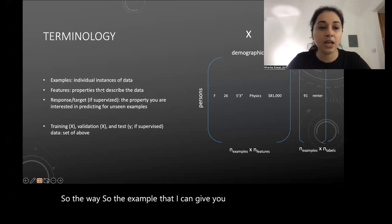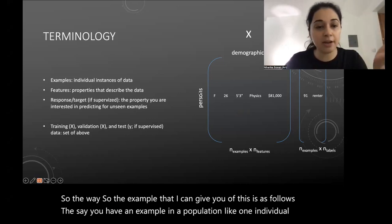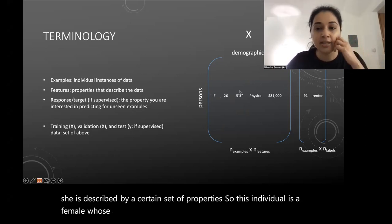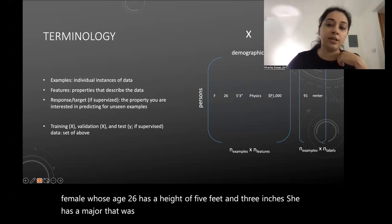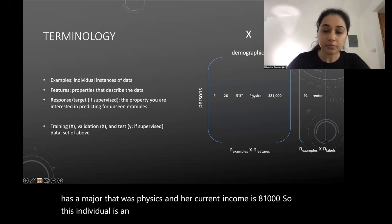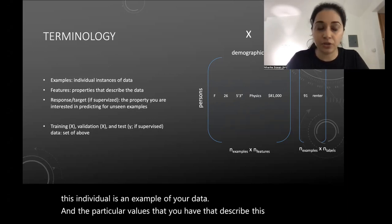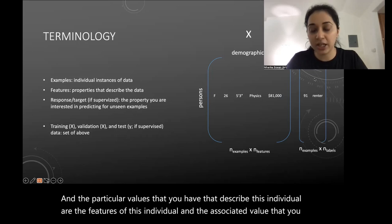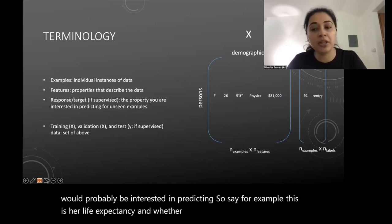An example of this: say you have one individual in a population. She is described by certain properties — she's female, age 26, height five feet three inches, major was physics, and current income is $81,000. This individual is an example of your data, and the particular values describing her are the features. The associated value you might be interested in predicting — say her life expectancy, or whether she's a homeowner or a renter — would be the target.